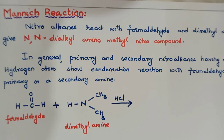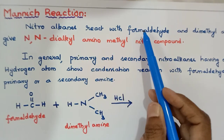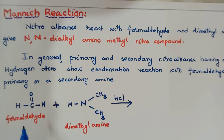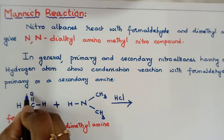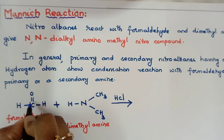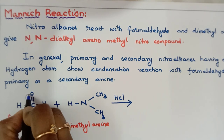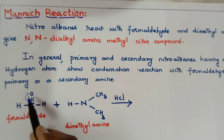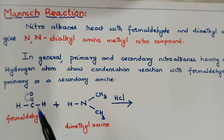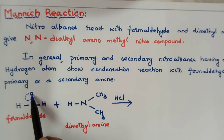In the statement, nitroalkanes react with formaldehyde and dimethylamine, but here I am starting the reaction with formaldehyde and dimethylamine; the nitroalkane participates in later steps. Looking at the formaldehyde: HC double bond O, this is the carbonyl group C double bond O. The pi electrons present here will be shifted towards or attracted by the oxygen atom, so oxygen gets a negative charge and carbon gets a positive charge.